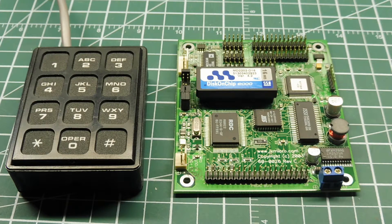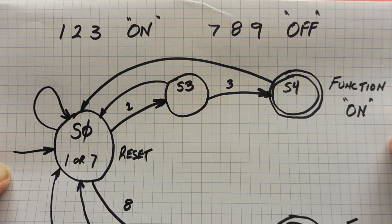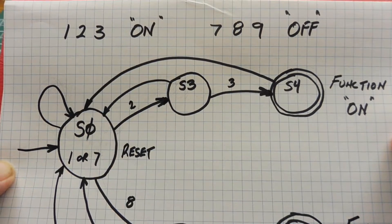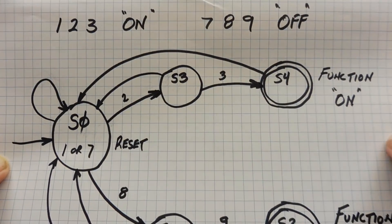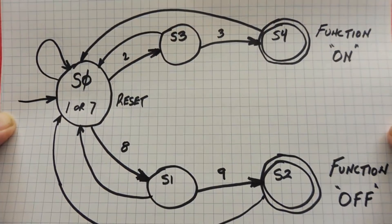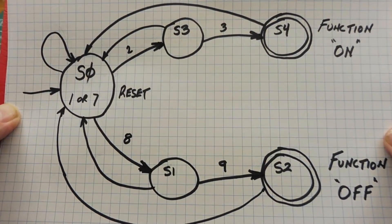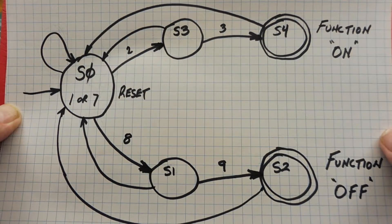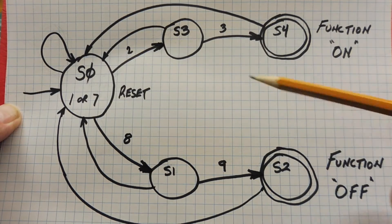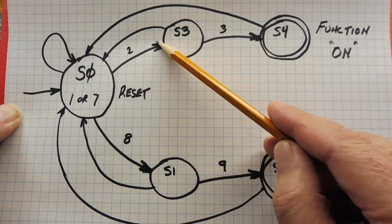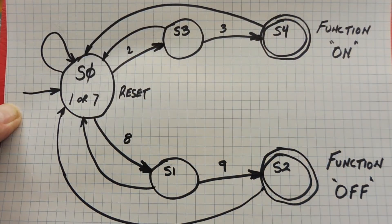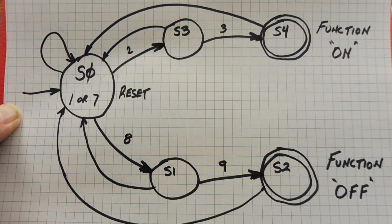Here's a finite state diagram of our keypad decoder, which will decode a key press sequence of 1, 2, 3 as function on, and 7, 8, 9 as function off. You can see our program consists of five states — each one of those circles is a state, S0 to S4. The program moves from state to state based on the current input values, and the arrows between states are called transitions. A state is an idle time where it's waiting for an input, and only one state at a time can be active.